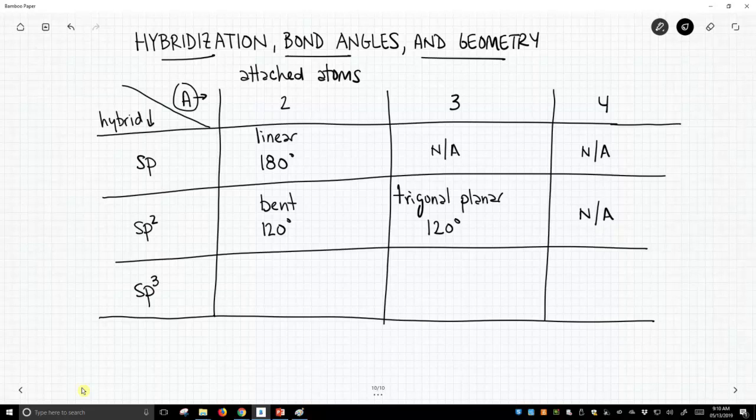Finally, if we have two attached atoms and our molecule is sp3 hybridized, we would say that geometry is bent and the bond angle is 109.5 degrees.